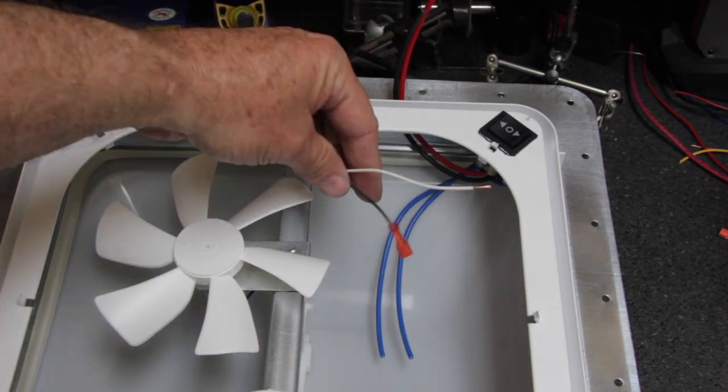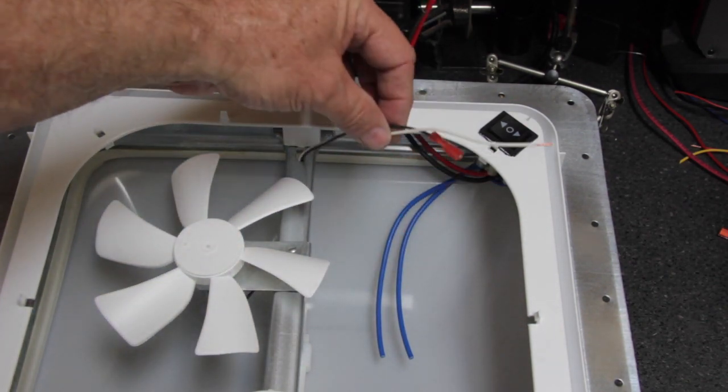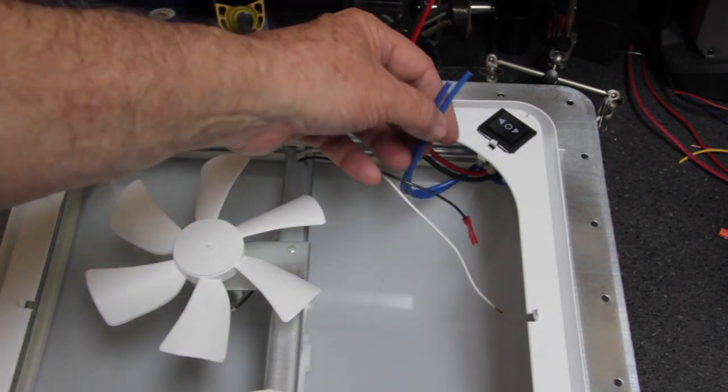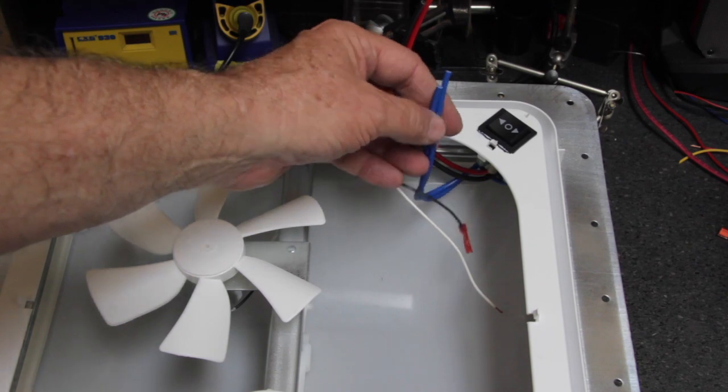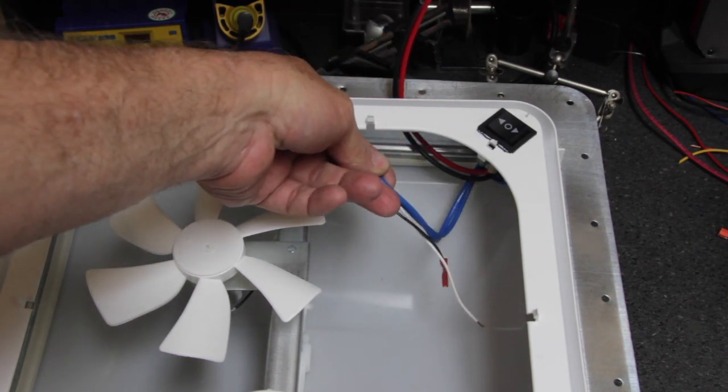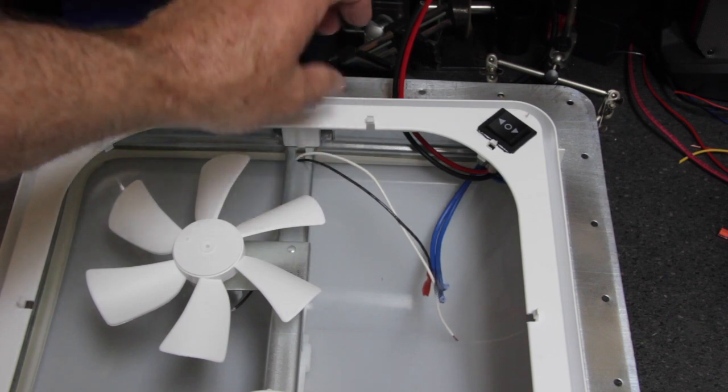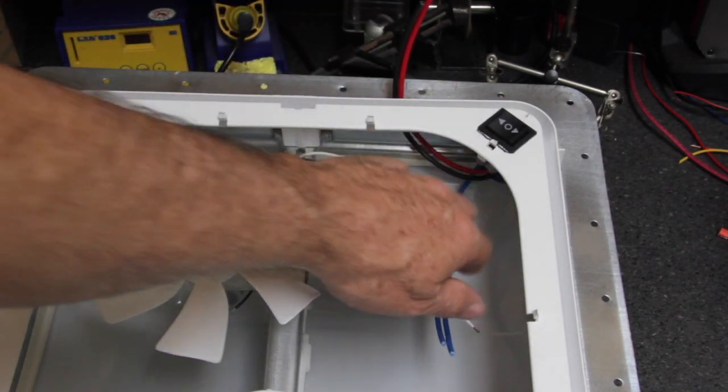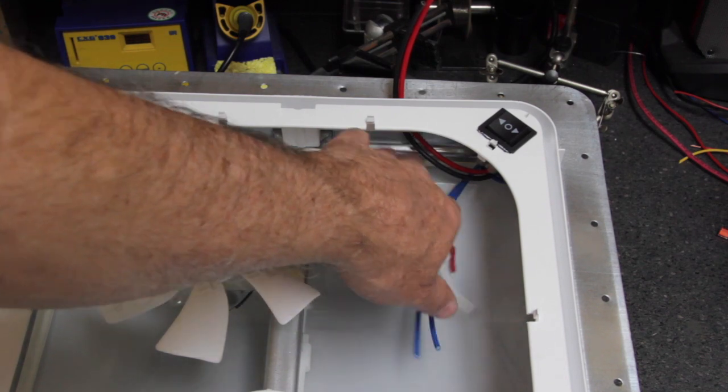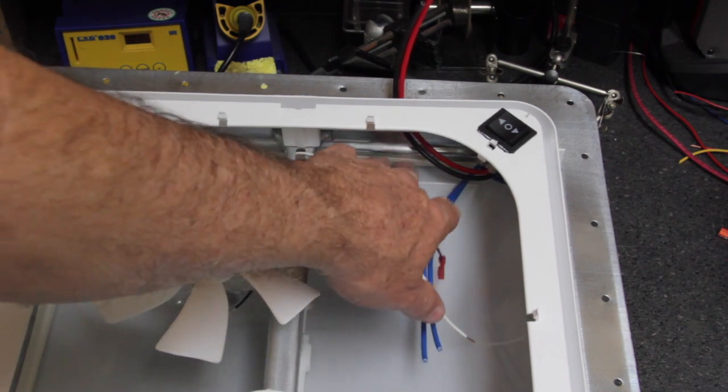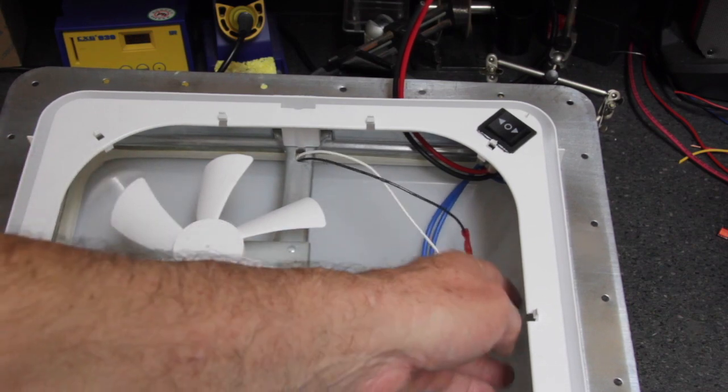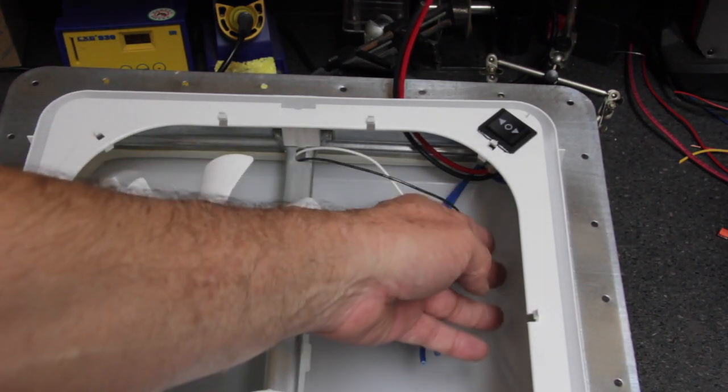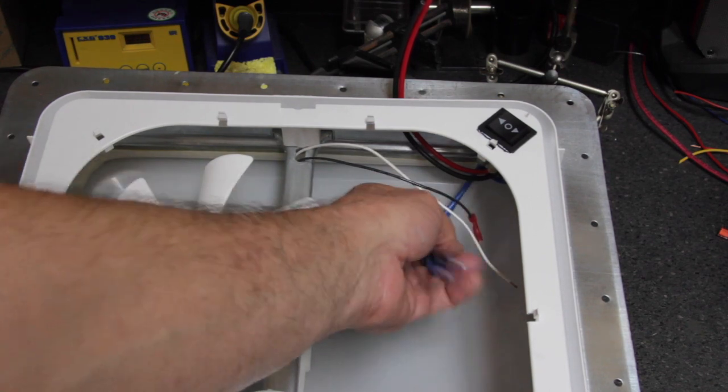We now have the two wires coming from the motor and the two wires coming from the switch which will attach to the wires of the motor. After we solder these, we will tape these wires to the inside of the metal housing so that the plastic fan shroud can pop open without interfering with the wires.